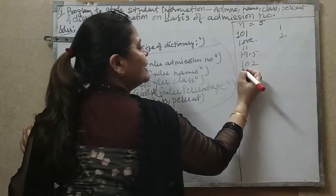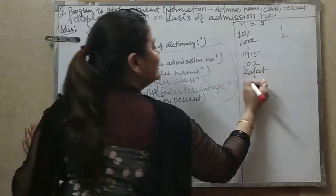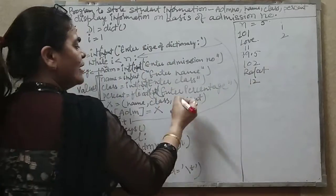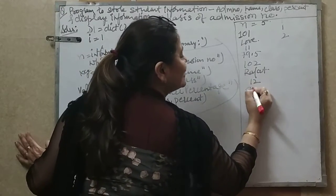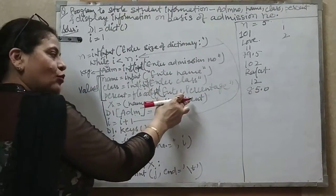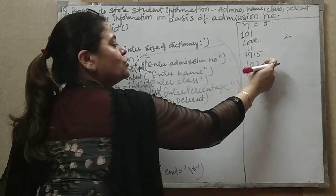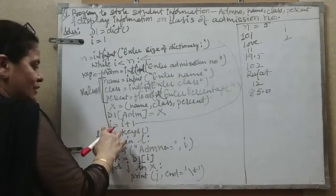Again it will ask for the name, let it be Rajat. Then ask for the class, let the class be 12, and the percentage, let it be 85.0. And x contains all three values, and the dictionary's second key value pair will become 102 with all three values in it.